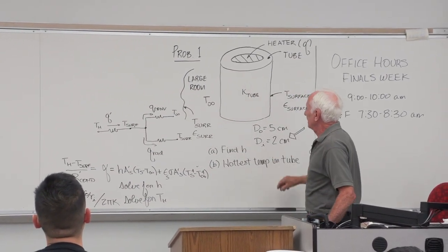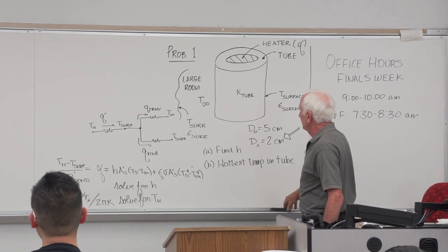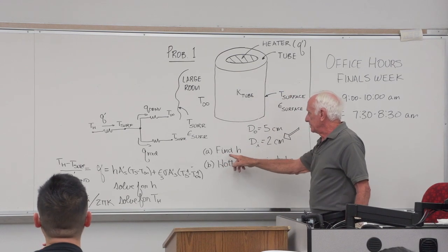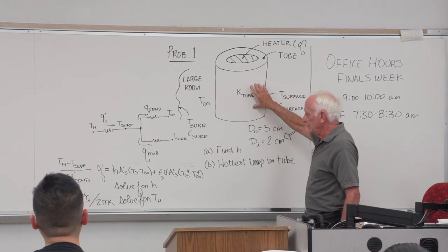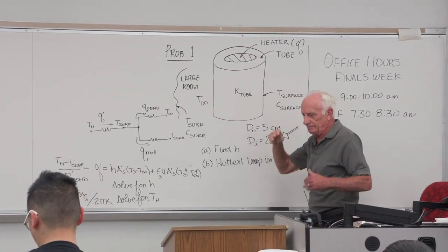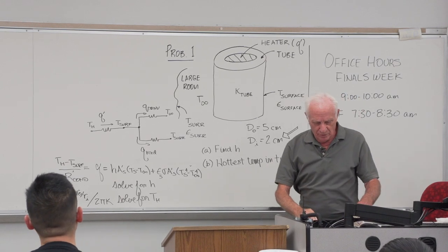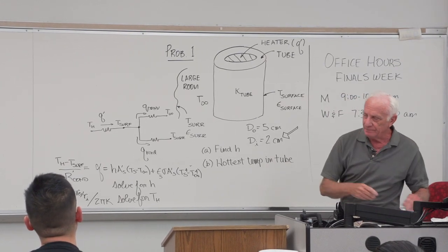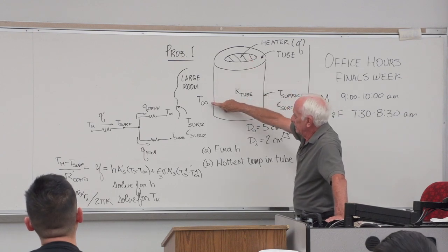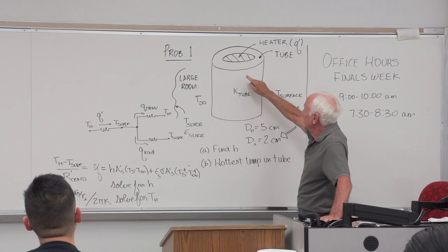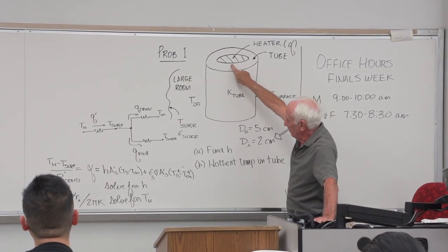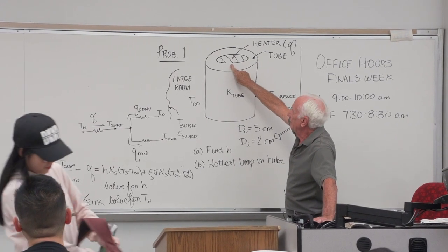The surface temperature of the tube was given — actually a maximum value was given. The emissivity of the tube on the outside surface was given. There's no length; it's a long tube. We were asked first to find the convection coefficient on the outside of the tube, and second, find the hottest temperature in the tube material. We know where the hottest temperature is going to be — next to the heater.